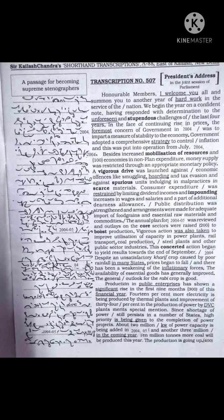About 2 million kilowatts of power capacity is being added in 2004-05 and another 3 million in the coming year. 10 million tons more coal will be produced this year. The production is going up. Public sector engineering industries are doing remarkably well. More railway wagons are being moved daily.